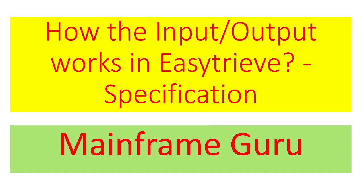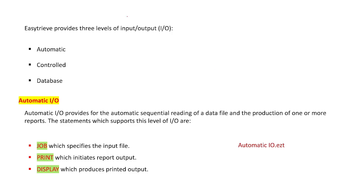Today we will discuss the specification of how input and output functions work in EGTRIB. There are three modes or levels of input/output in EGTRIB: first is the automatic input/output, second is the control input/output, and third is the database input/output.